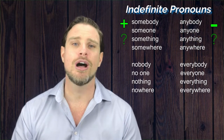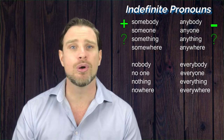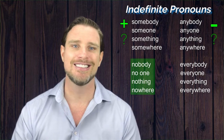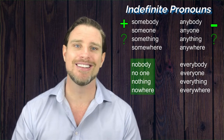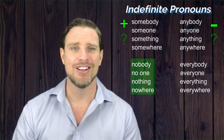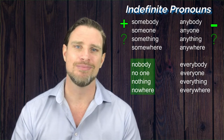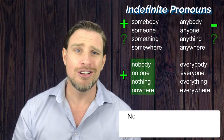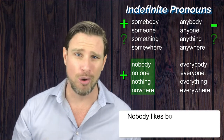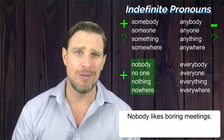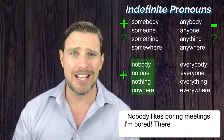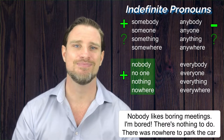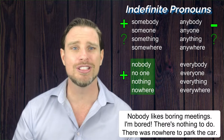Now let's talk about indefinite pronouns starting with 'no' — so nobody, no one, nothing, and nowhere. These are used in positive clauses. For example: 'Nobody likes boring meetings.' 'I'm bored. There's nothing to do.' 'There was nowhere to park the car.' All positive sentences.